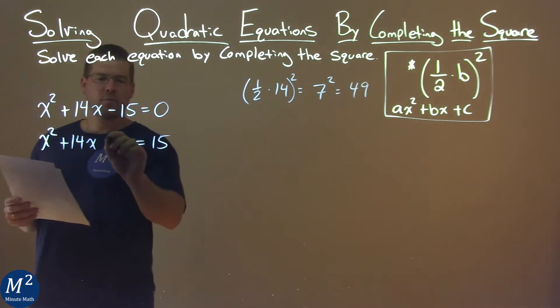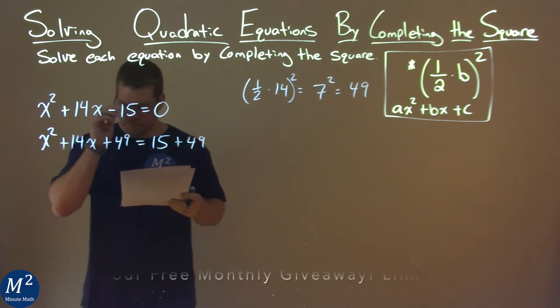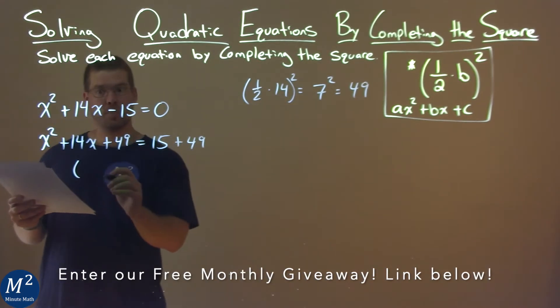So, we're going to add a 49 to both sides of the equation. So, what do we get? Well, the left-hand side is a perfect square now, the whole point.